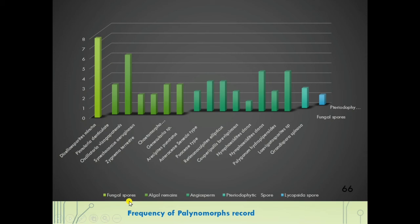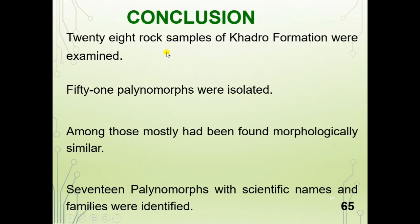This slide shows the frequency of palynomorphs. Conclusion: 28 rock samples of Kherdo Formation were examined. 51 palynomorphs were isolated. Among those, mostly morphologically similar ones were found. 17 palynomorphs with scientific names and families were identified.